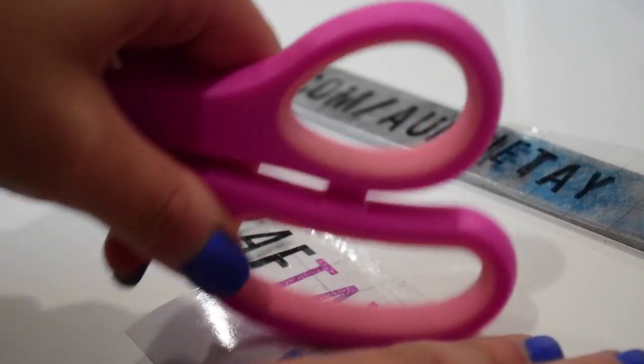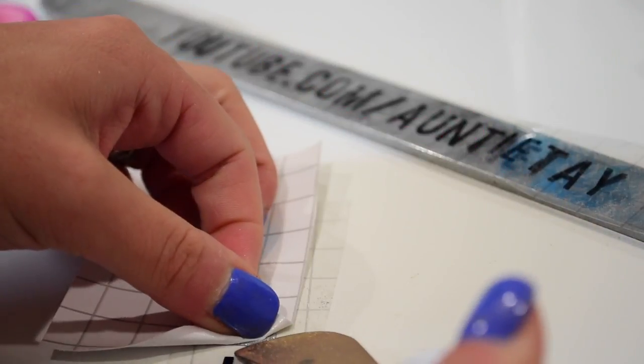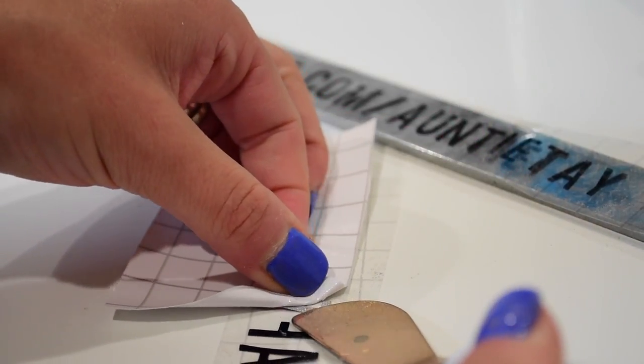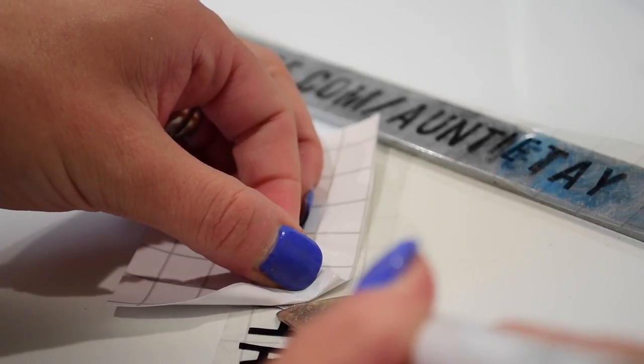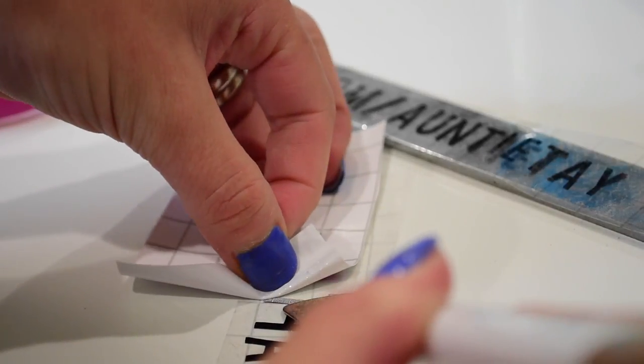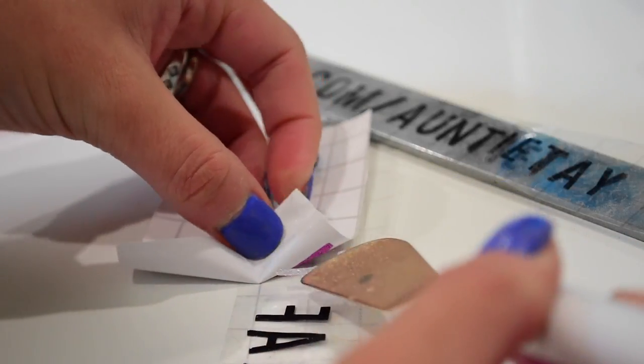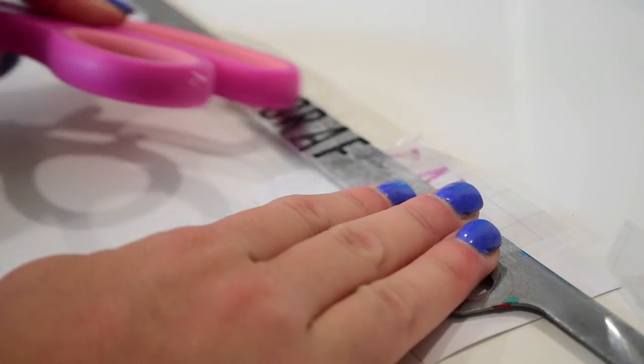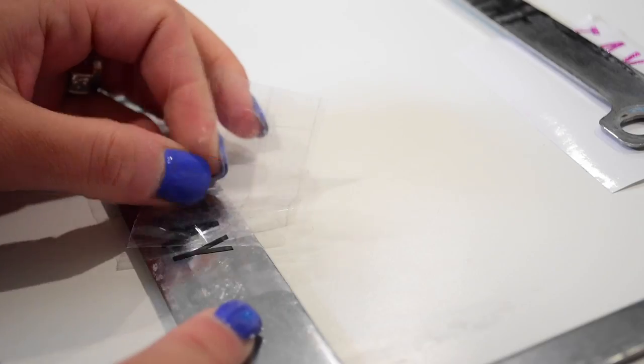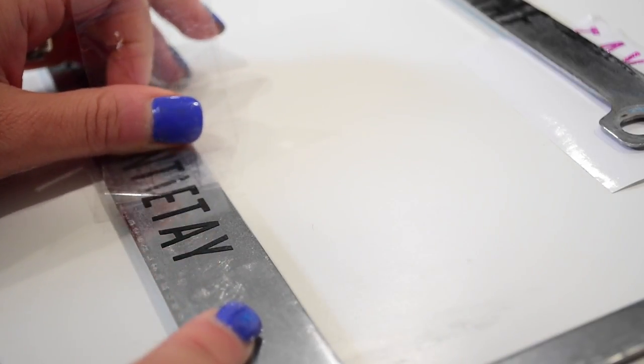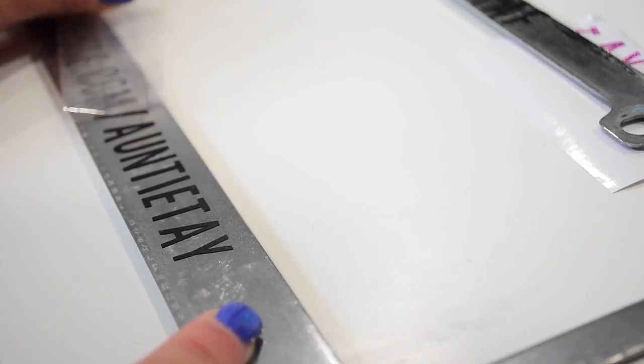But for this project, my glitter vinyl was not working because I did de-stick my transfer tape really good. So it wasn't sticking and glitter vinyl is really finicky. So it's a special type of vinyl that needs extra strong grip tape. So for this part, I would actually have used two different pieces of transfer tape if I went back and did it again.